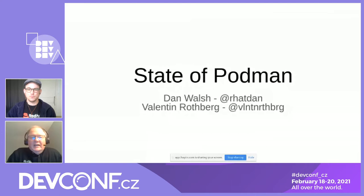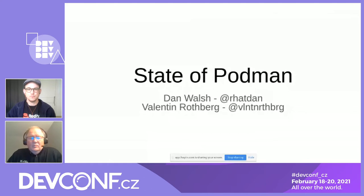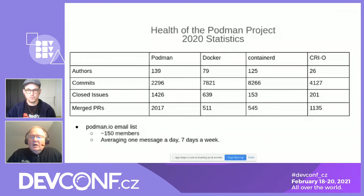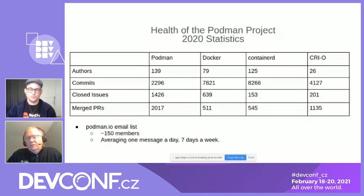To give you a few more stats, Podman is often compared to Docker. In 2020, Podman had about 139 different authors, a few thousand commits, about twice as many issues worked on than Docker, and four times as many merges. Podman is built up of a whole bunch of other projects — container storage, containers image, containers comment — so it's very active.